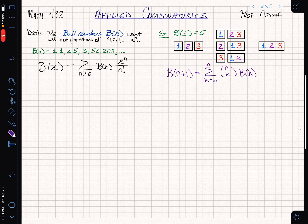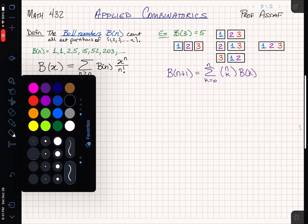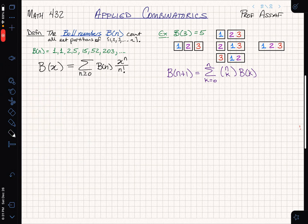We found a nice recurrence relationship last time, so we're definitely going to want to use that. How did that go? We found that B(n+1) is equal to the sum from k equals 0 to n of n choose k, B(k).